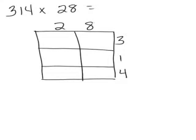That means you need the number of rows to be the same number as the digits in one number and the number of columns to be the same number as the digits in your other number.